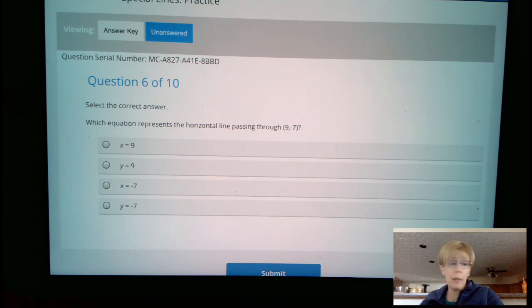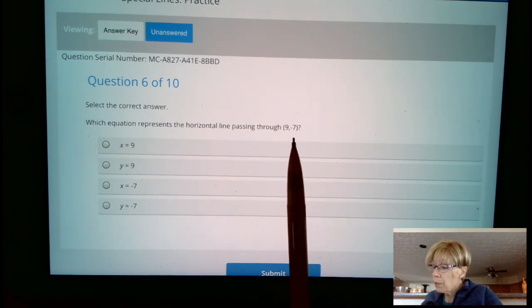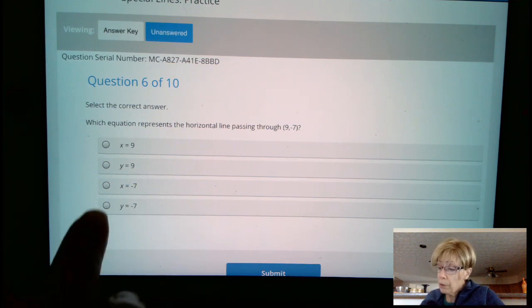a reminder is horizontal line is going to be a y equals. So we can point out that our answer is either going to be y equals 9 or y equals negative 7. And the y value in this point is negative 7. So our answer is going to be y equals negative 7.